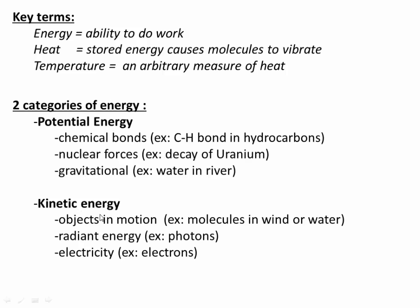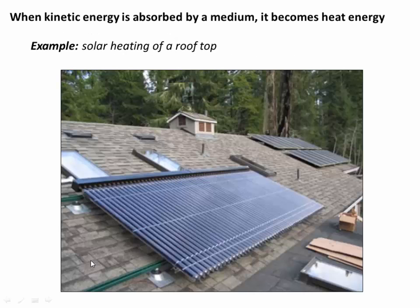We can also think of energy as divided into potential energy and kinetic energy. Potential energy is a way to store energy — good examples are chemical bonds, nuclear forces in an atom, or gravity. If water is up at the top of a river it has potential energy that it will release as it flows back down. As energy is released it gets converted from potential to kinetic energy, which includes any object in motion like water flowing downhill, but also radiant energy — photons moving through space carry kinetic energy, and electrons moving through a wire carry kinetic energy too.